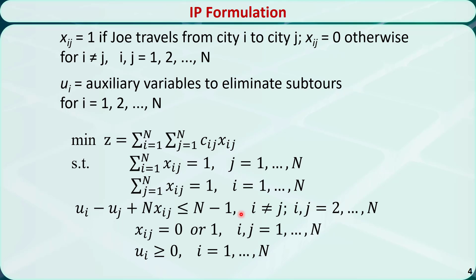For a traveling salesman problem with n cities, the number of decision variables xij is n times n. This equation will generate n equality constraints. So is this equation. This one will generate n-1 times n-1 inequality constraints because we need to enumerate i and j from 2 to n.